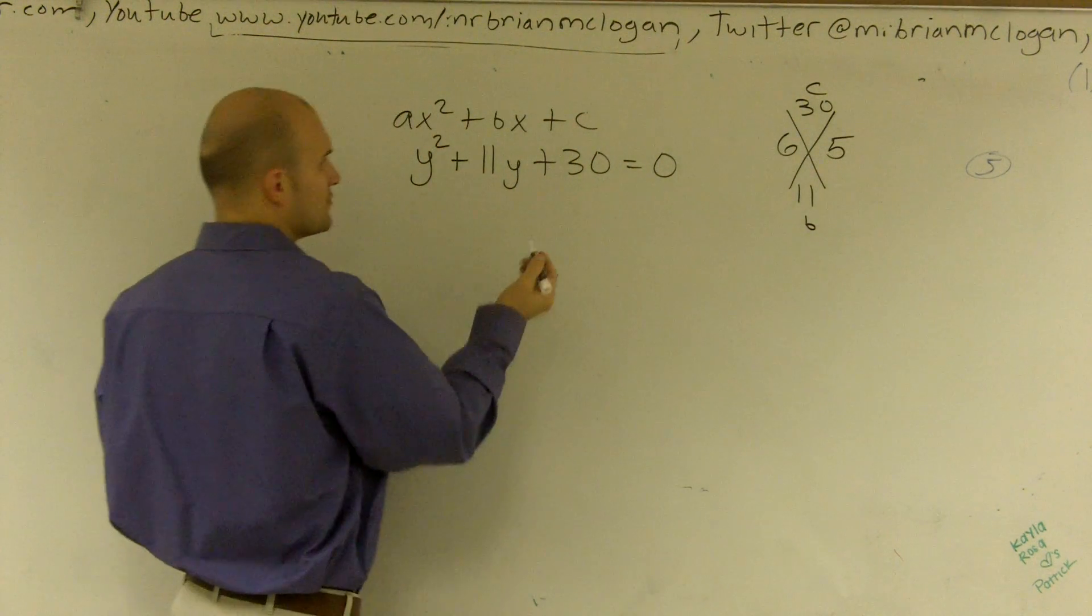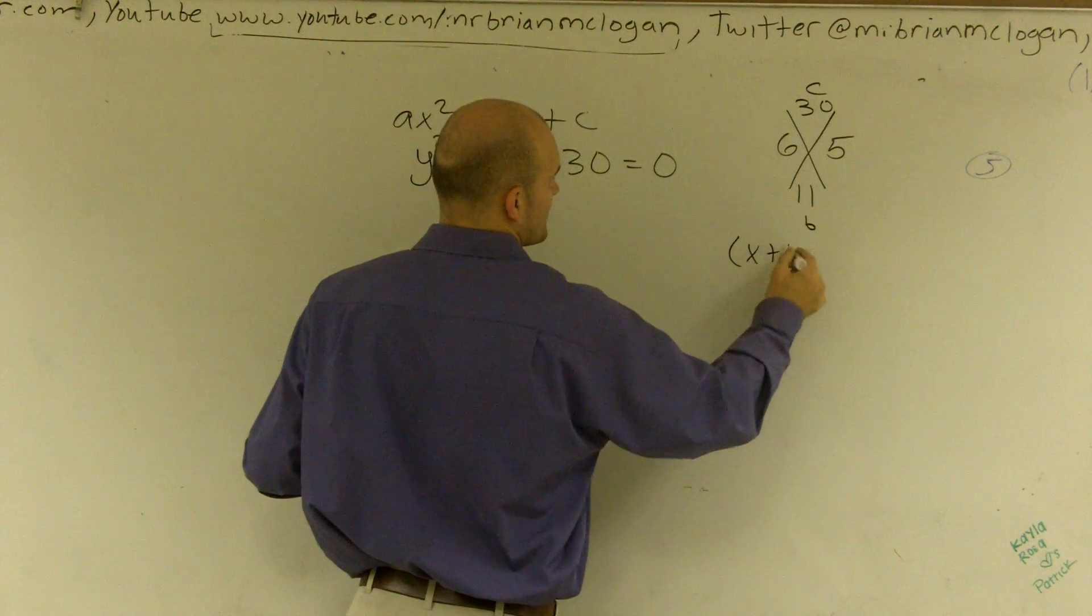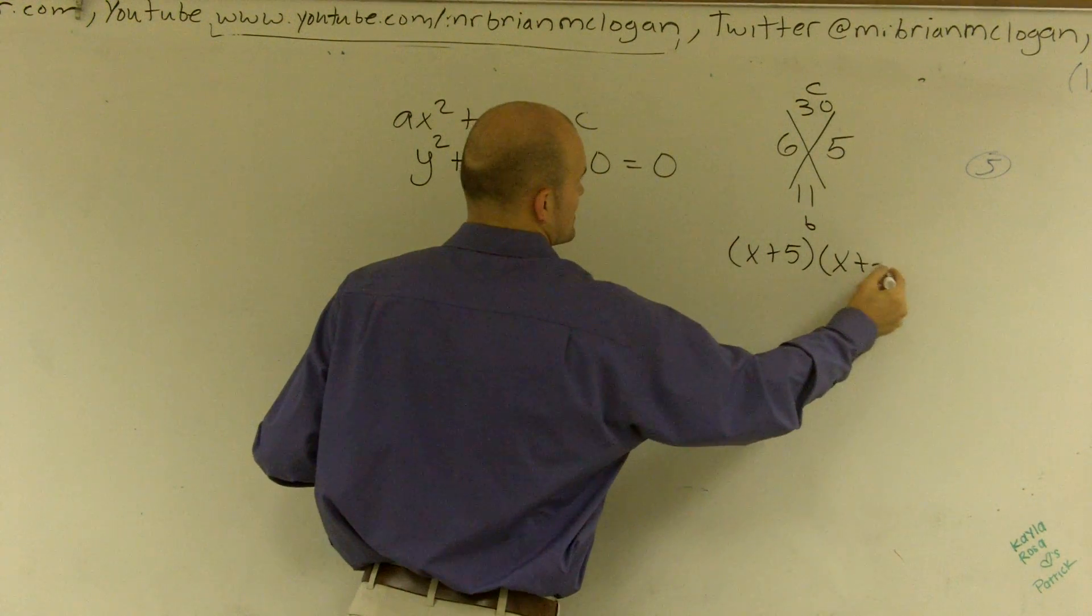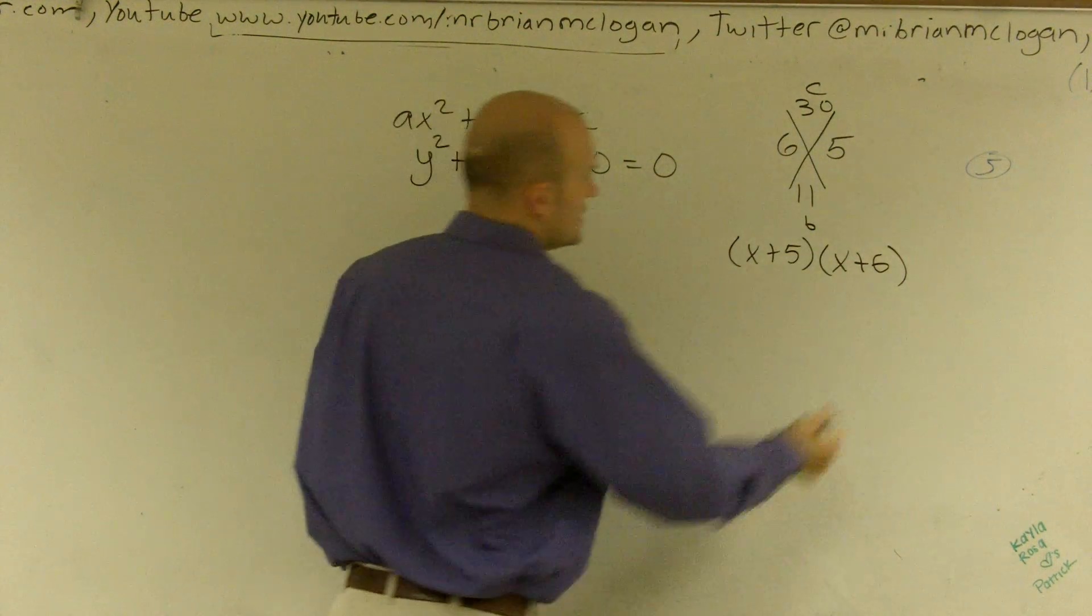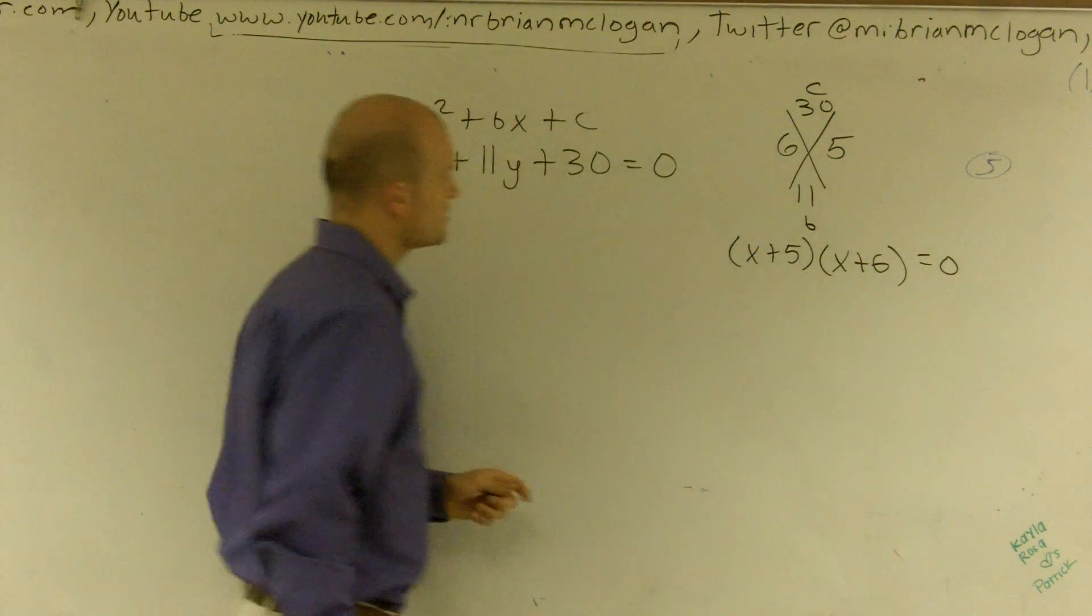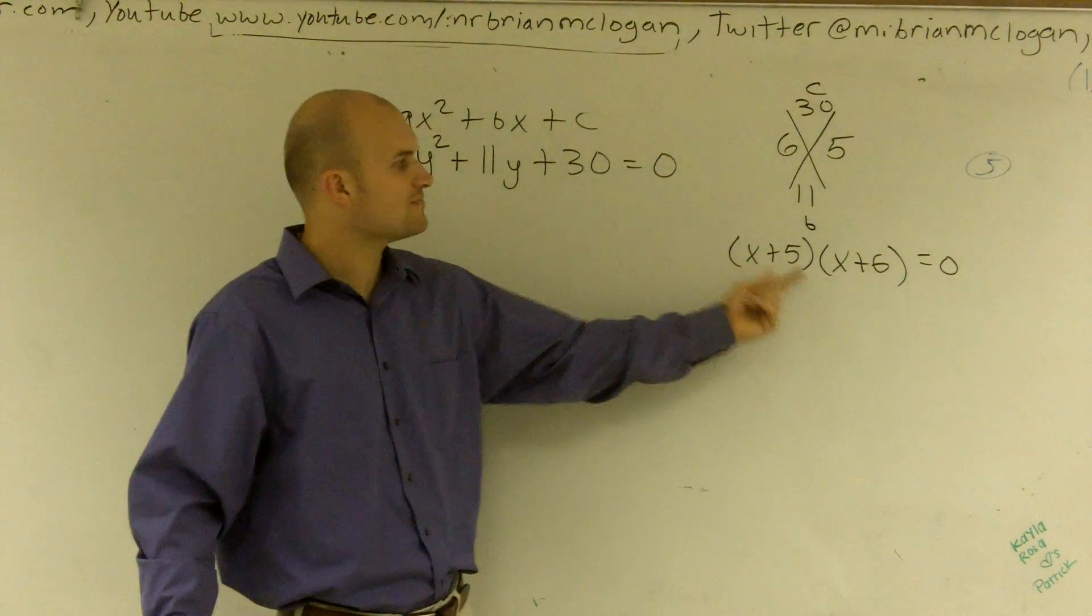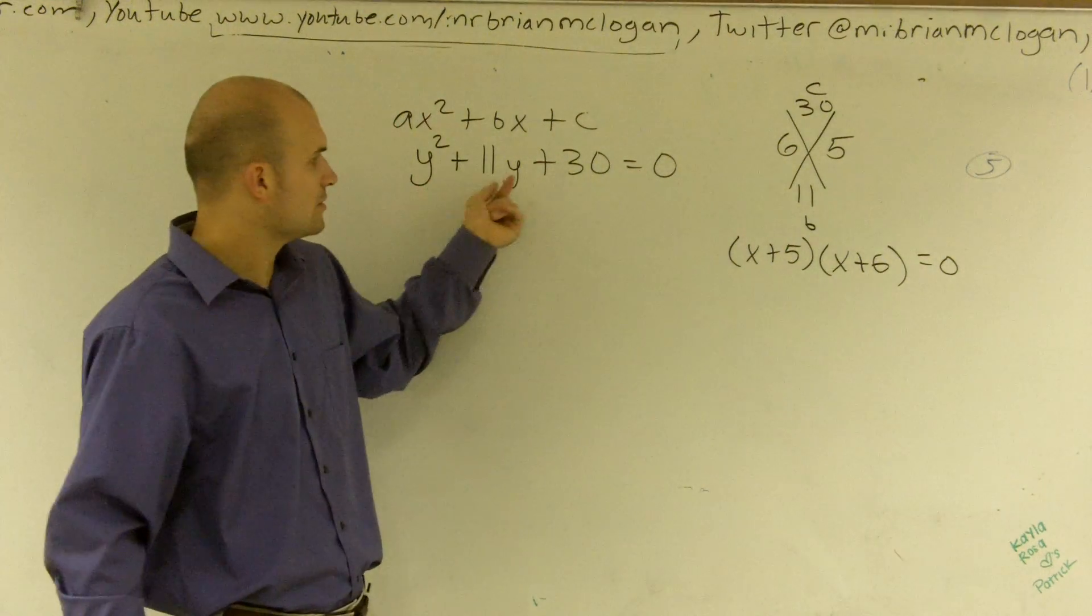So therefore, I can really factor this out really quickly as saying x plus 5 times x plus 6 equals 0. And if you think about that, if you were to use the FOIL technique, x plus 5 times x plus 6 will, oh, I'm sorry.